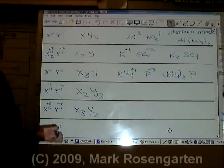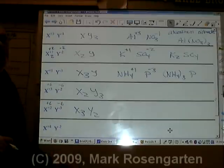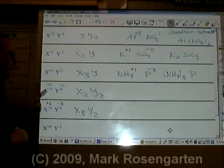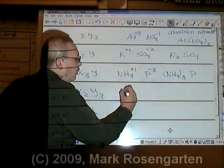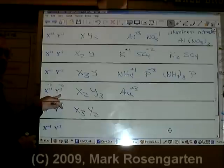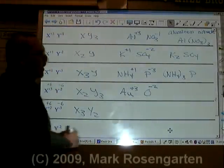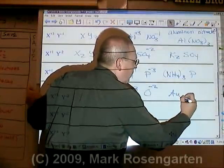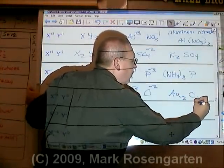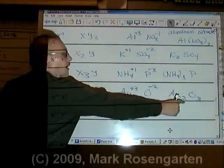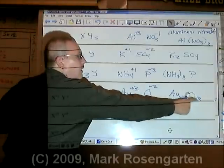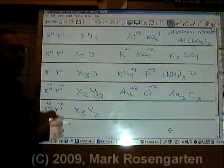Unless, of course, the charge is the same, in which case you just cancel them out one to one. So, let's say, for example, that for our plus three ion, we have gold, Au⁺³. And Y is the oxide ion, O⁻². Then you end up with Au₂O₃, plus six minus six. And it cancels out.